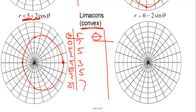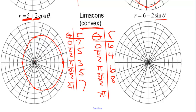For r equals 6 minus 2 sine theta, counting by pi over 2's: 0, pi over 2, pi, 3 pi over 2, 2 pi. Sine of 0 is 0, so r is 6. Sine of pi over 2 is 1, so r is 4. Pi: sine is 0, so r is 6. At 3 pi over 2, sine is negative 1, so r is 8. And 2 pi is back to 6. Because 6 is 4 or more — it's twice 2 — this is going to be a convex limaçon. We circle around, go a little wider, go convex to that point, a little wider, and back to where we started. Thank you.